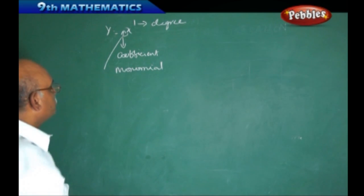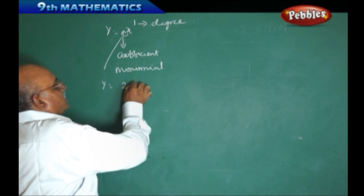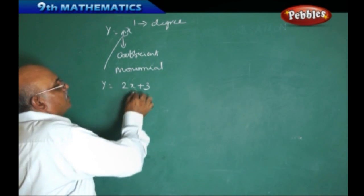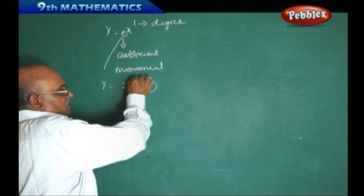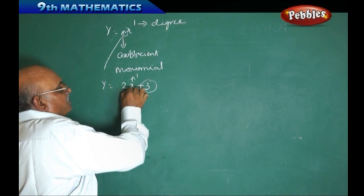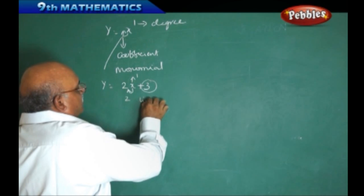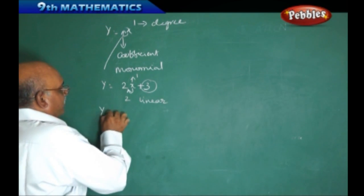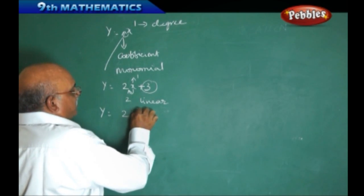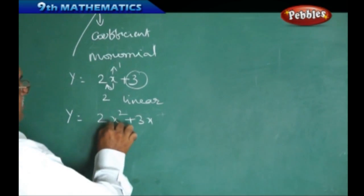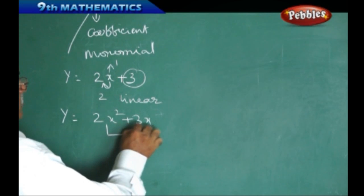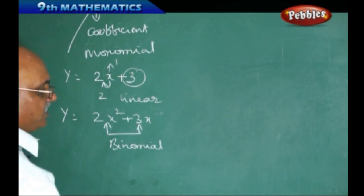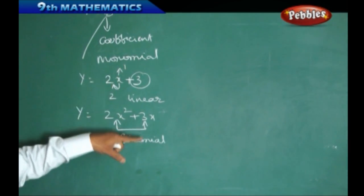One more example: 2x plus 3 — this is called a linear polynomial because the power of x is 1, the coefficient of x is 2, and 3 is a constant term. Now if I take y equal to 2x square plus 3x — since it consists of two terms, this we are calling it a binomial. Any expression which consists of two terms is called a binomial.